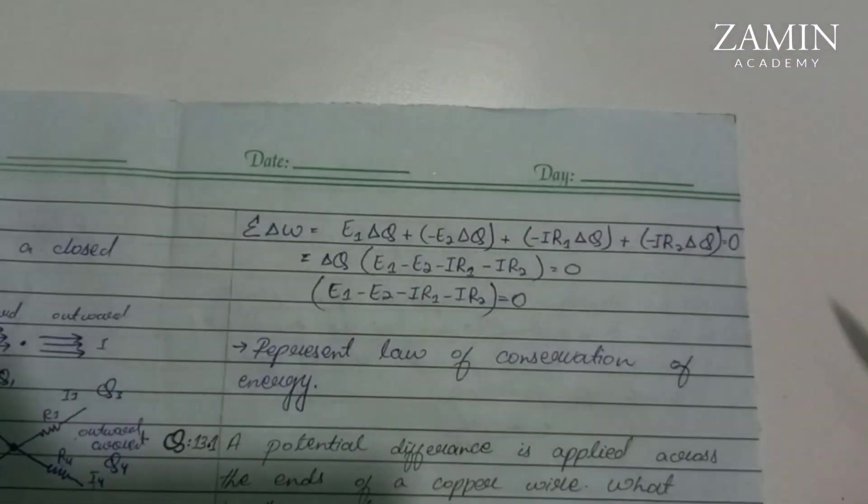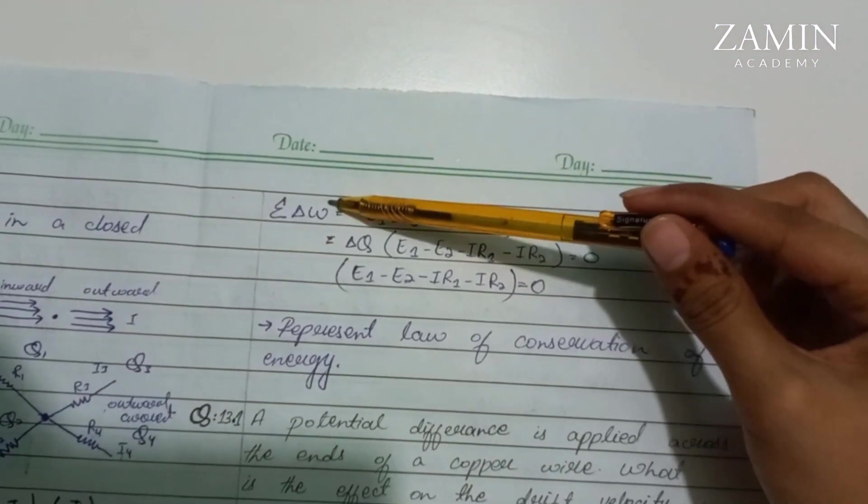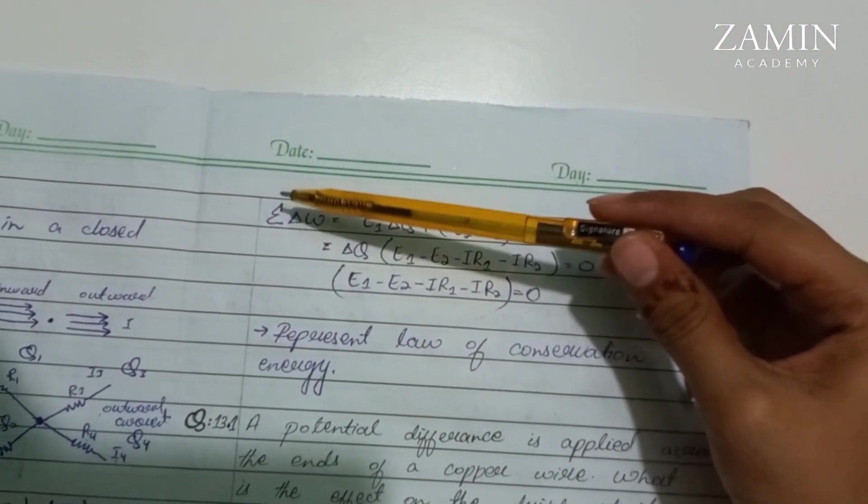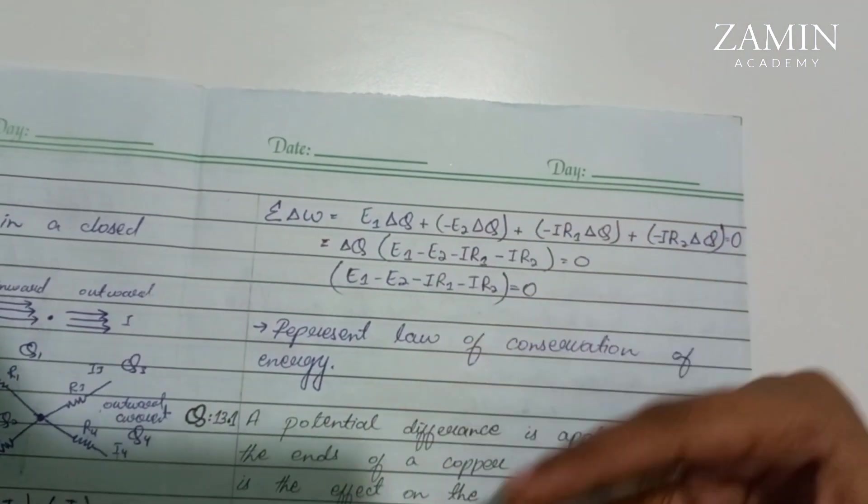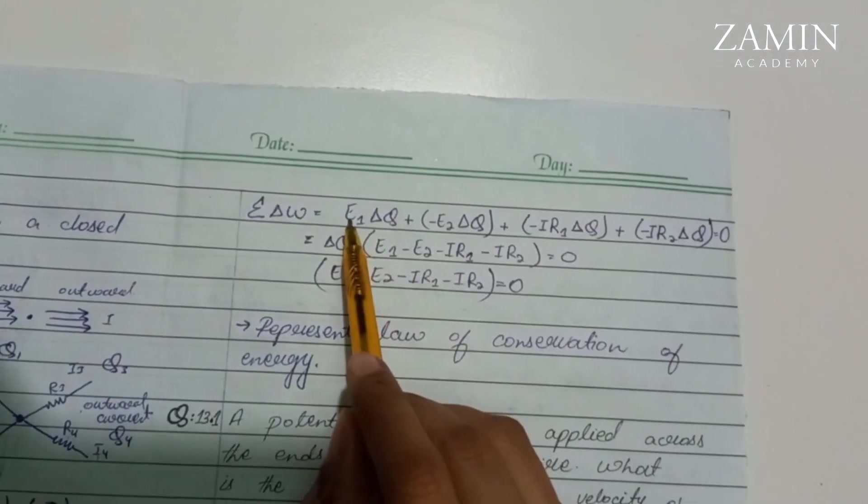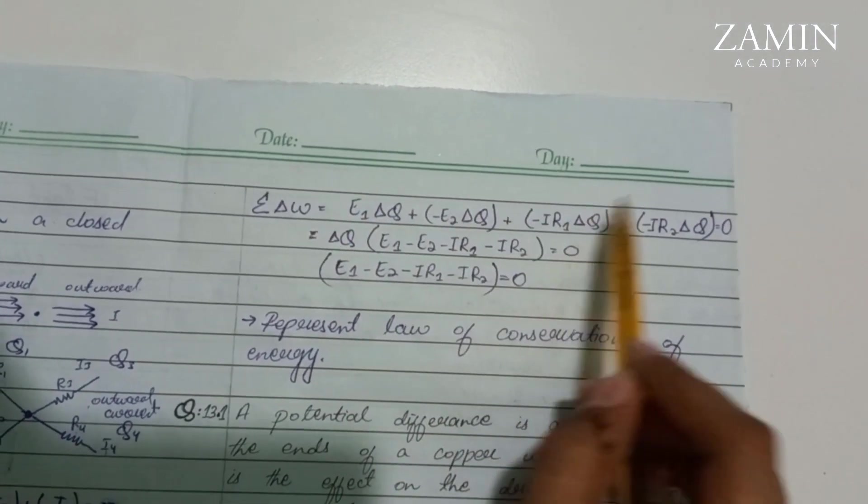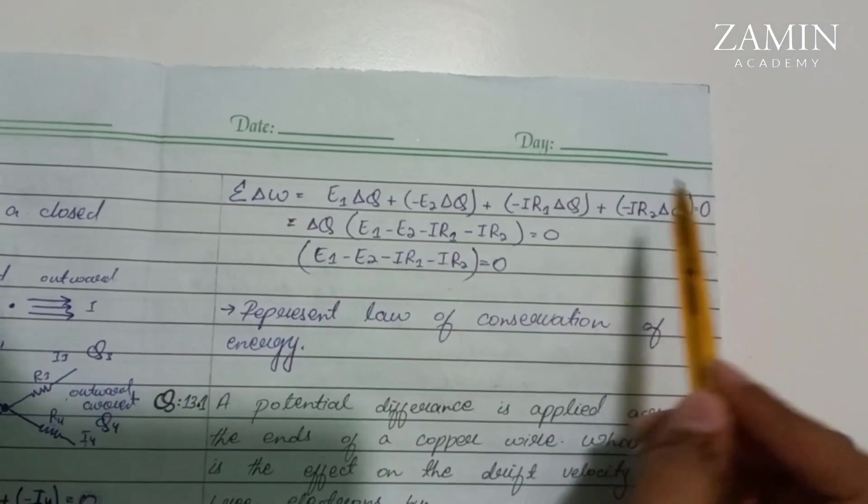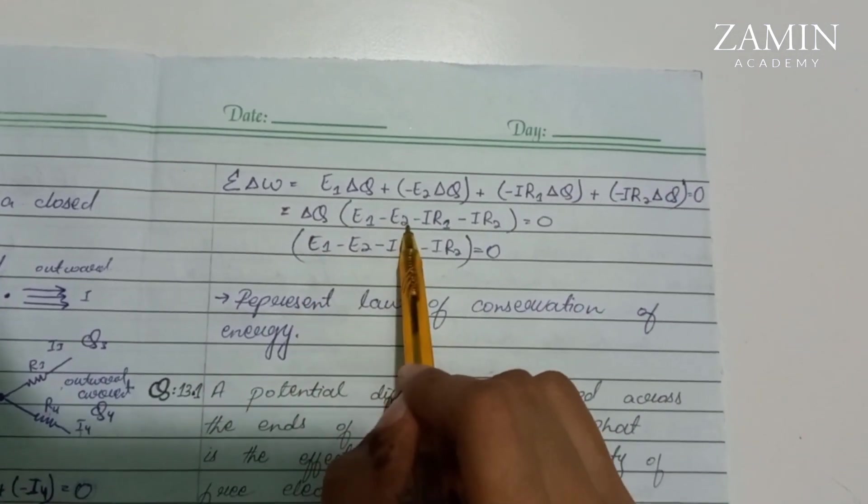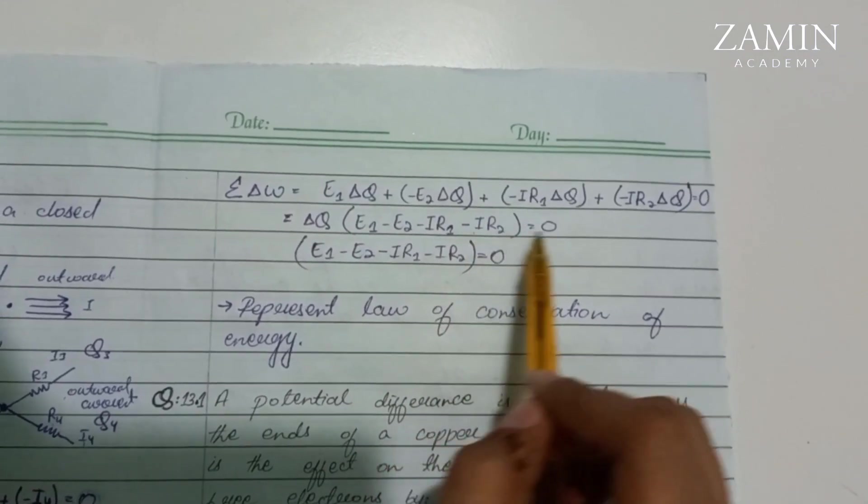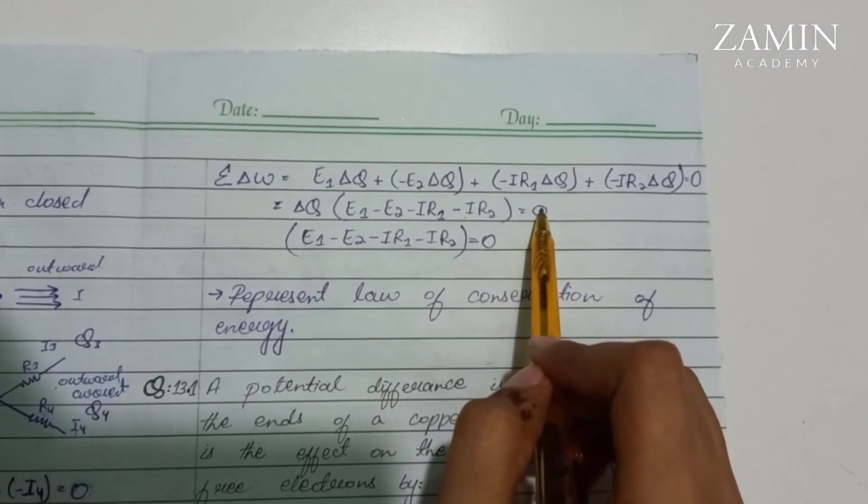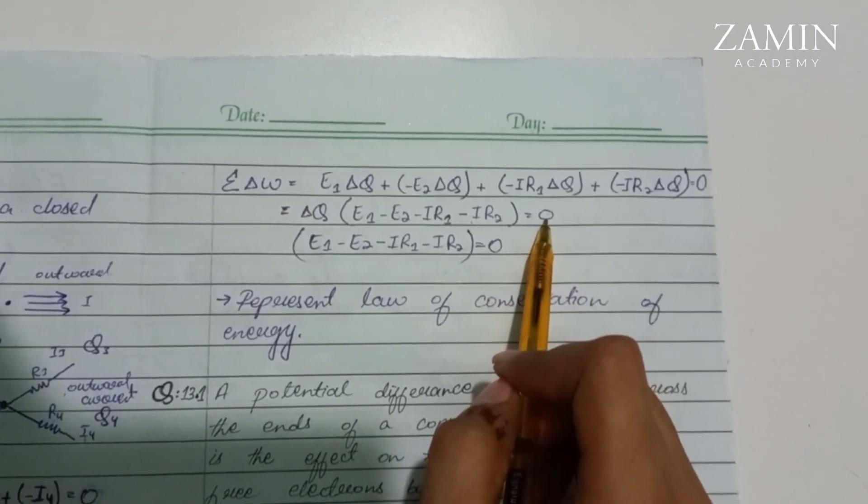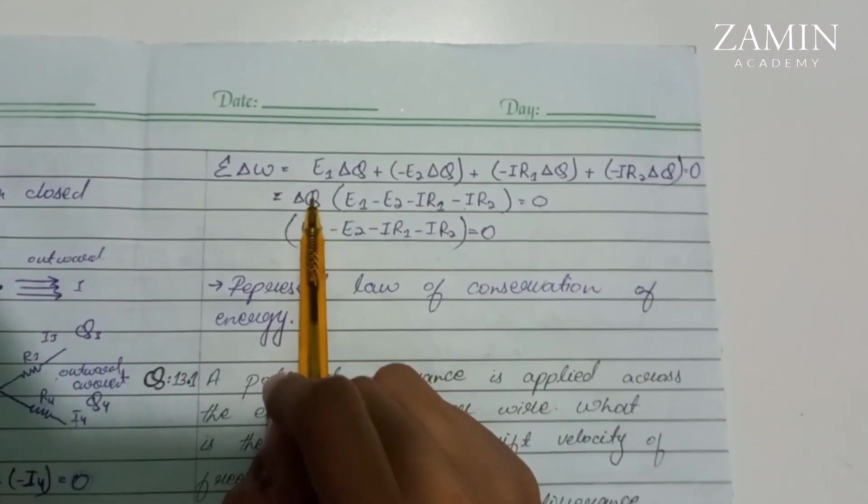Now we will sum them. Here we submit delta W, every work done. We have four work done terms: work done 1, 2, 3, and 4. Here we have delta q times (E1 minus E2 minus IR1 minus IR2) equals zero.